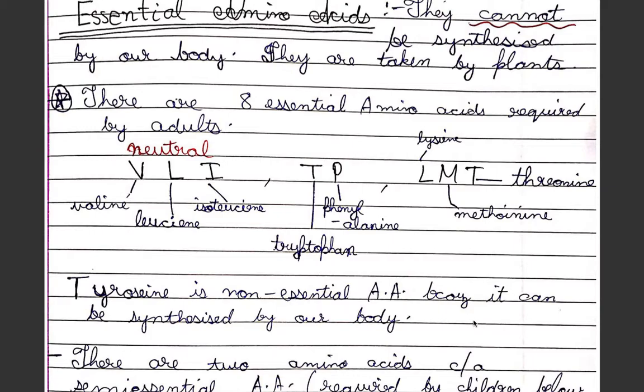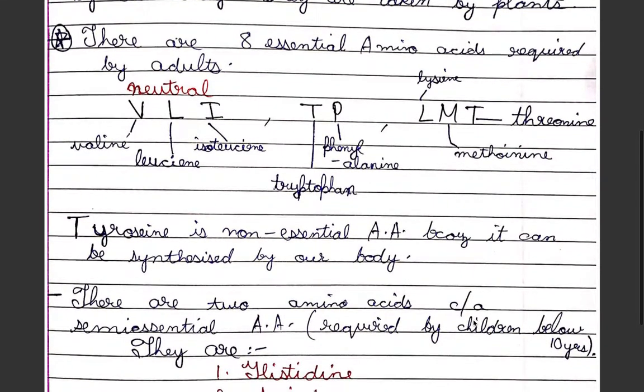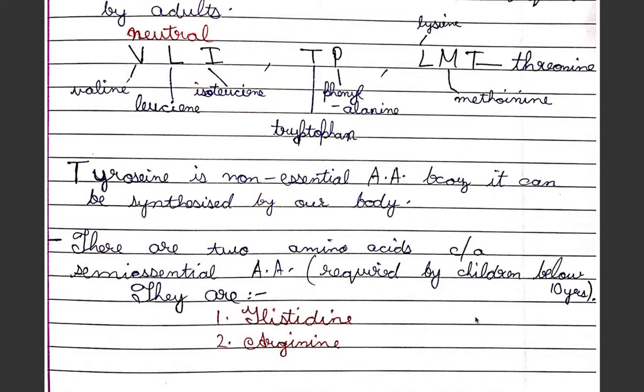There are two amino acids called semi-essential amino acids because they are required by children below 10 years. Those are histidine and arginine.